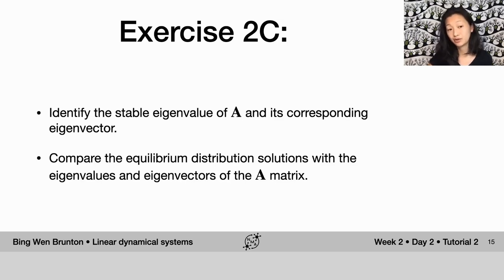So what you're going to do is take the eigen decomposition of A and identify which one is a stable solution and look at its corresponding eigenvector. And you're going to compare this eigenvector to the equilibrium numerical solution that developed in exercise 2b.